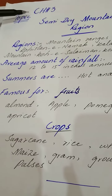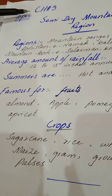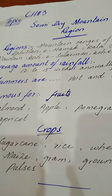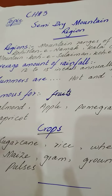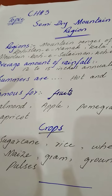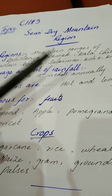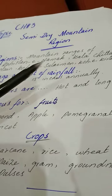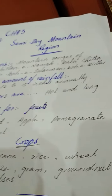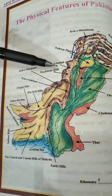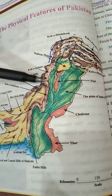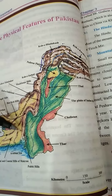Welcome dear students. From chapter number 3, the topic is the major natural regions, and today's discussion topic is the semi-dry mountainous regions. As we talked about in our previous lecture about the dry mountainous regions, in this topic we will talk about the ranges of Kohistani Namak, Kalachita mountains, Kohi Suleiman, and Kohi Kirthar. These mountainous regions are located as you can see on the map — Kohi Safed, Namak, Kohi Suleiman, and Kohi Kirthar.